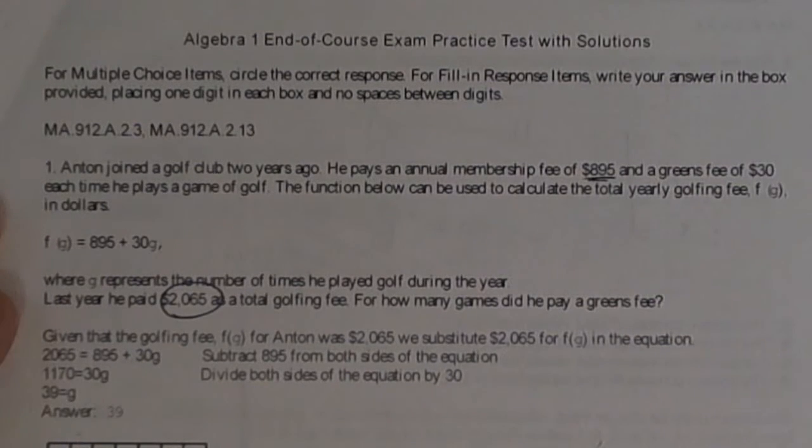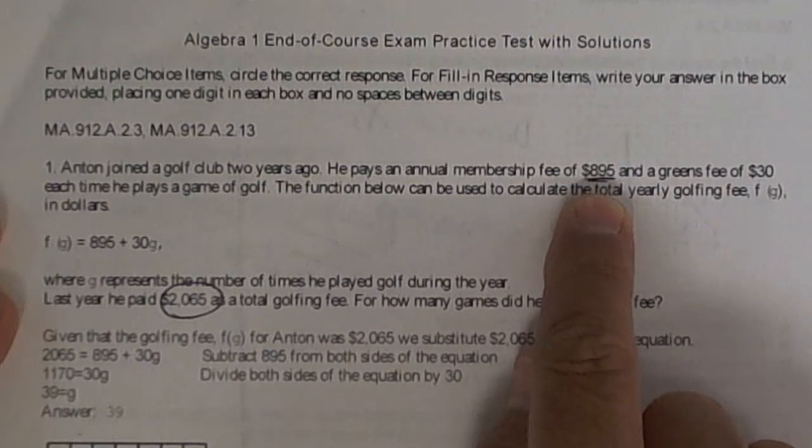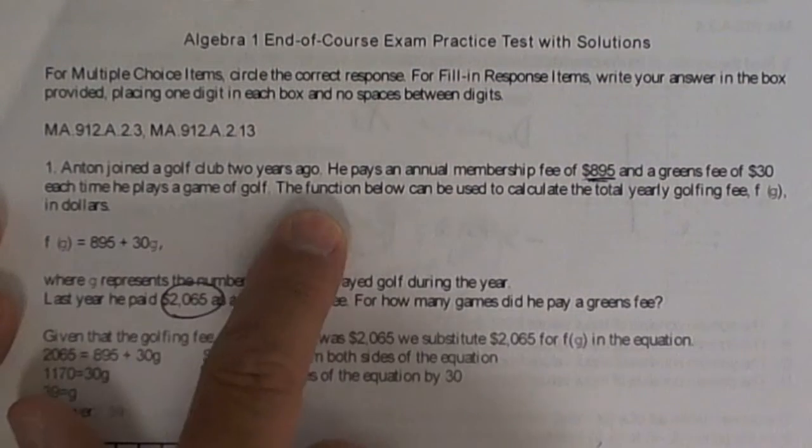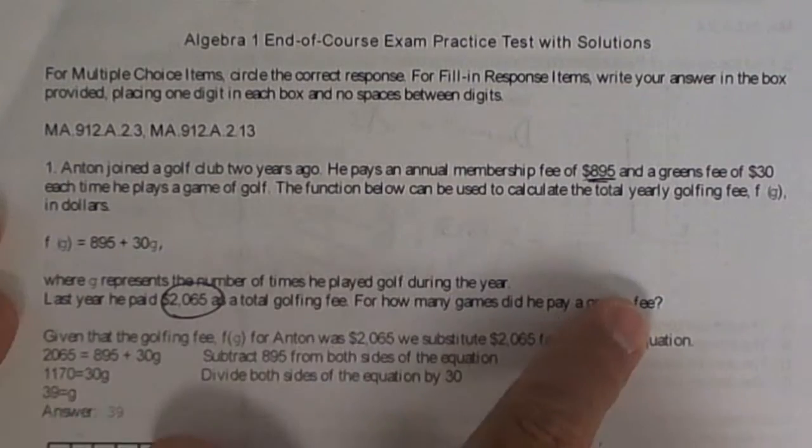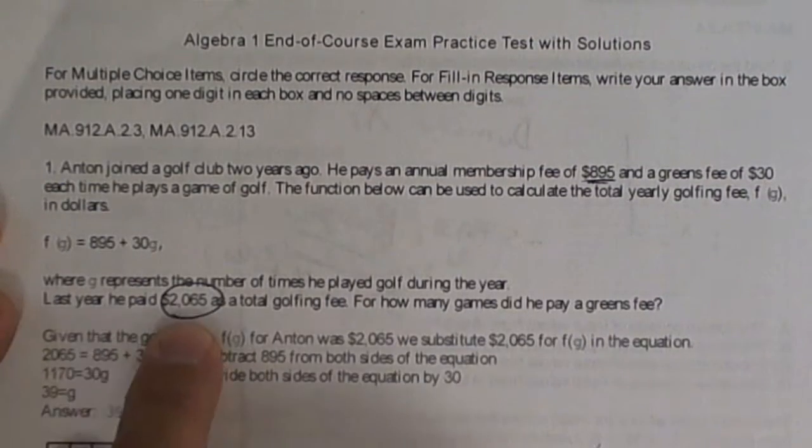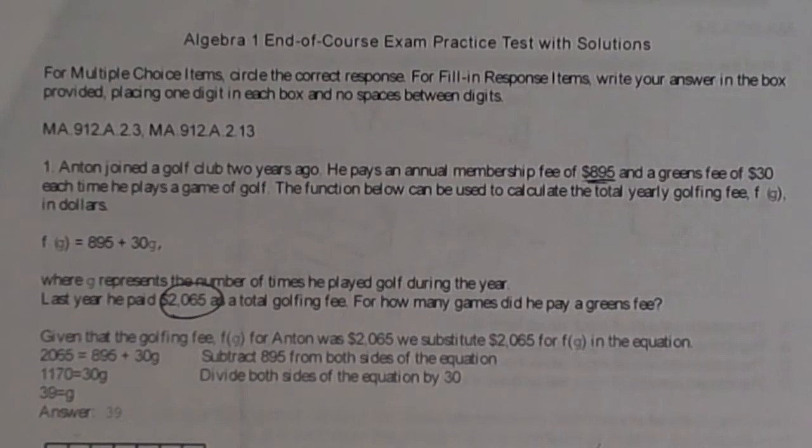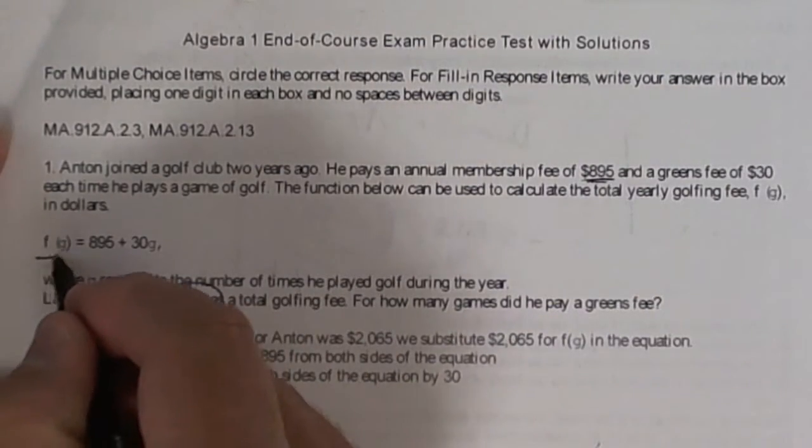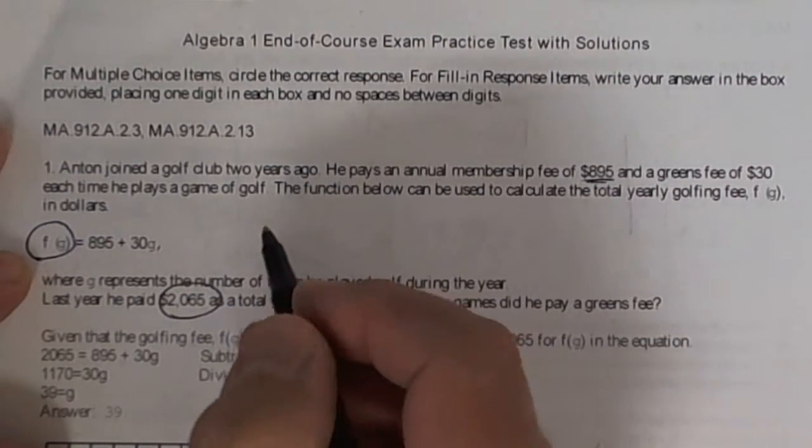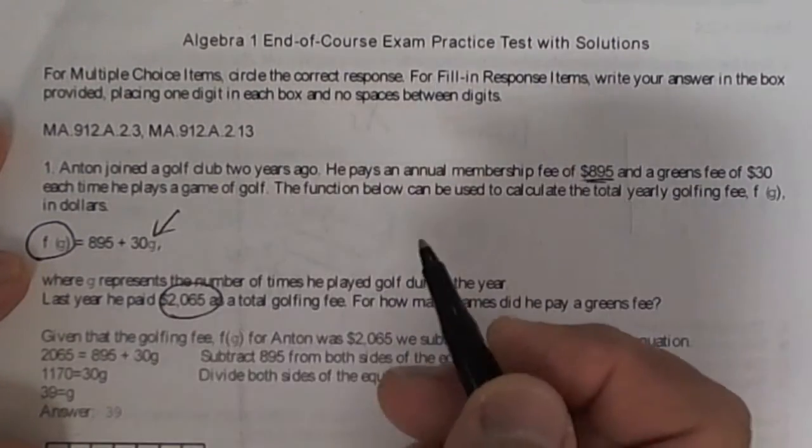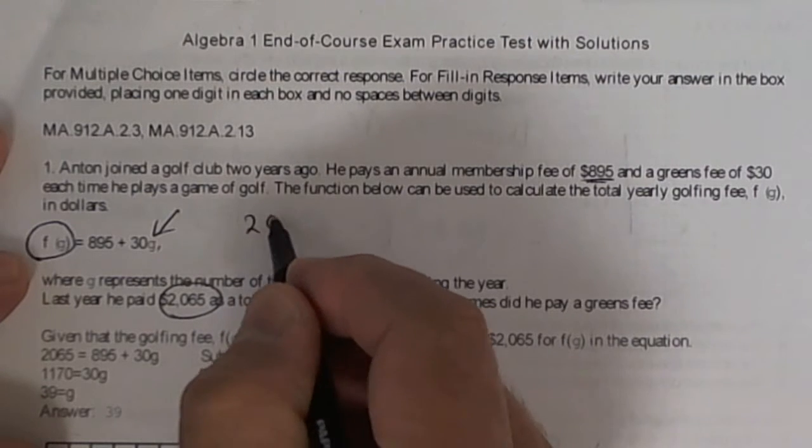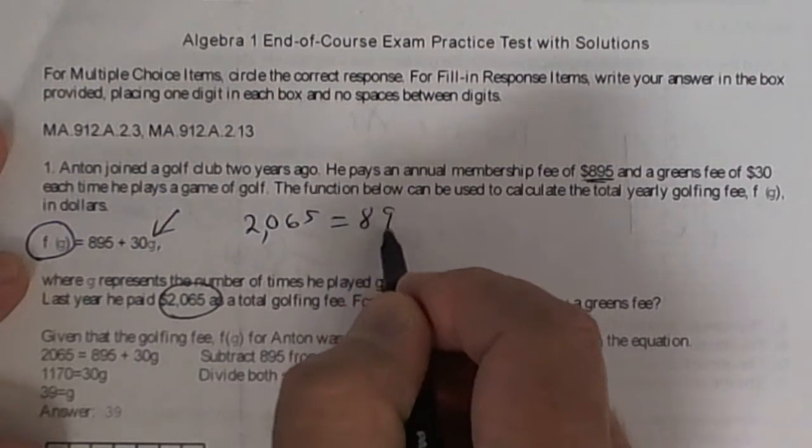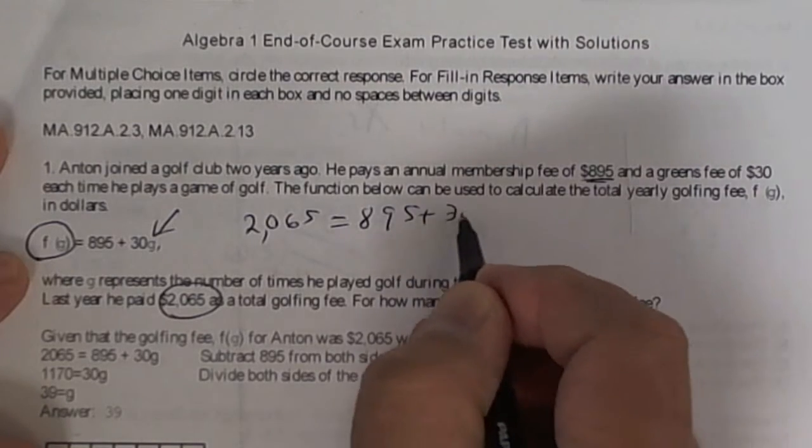This one right here says Anton joined the golf club two years ago. He pays an annual membership fee of about $900. He agrees to pay $30 for each game. They give you the formula. Last year he paid a total of this amount. That's the total amount that he paid. So that would go here, the total amount that he paid. So I would put, and you're looking for the number of games, so I'd put 2065 is equal to 895 plus 30g.